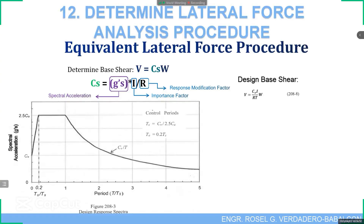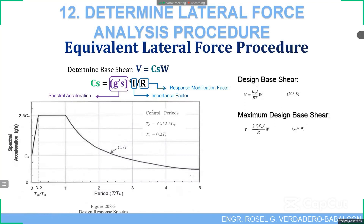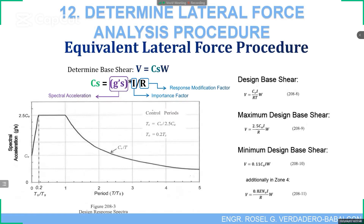The design base shear is V = CvI / (RT) times the seismic weight W, found in equation 208-8. The maximum design base shear is 2.5CAI / R times W, from equation 208-9. The minimum design base shear is 0.11CAI times W, from equation 208-10. Additionally, in zone 4, V = 0.8ZNVI / (RT) times W, from equation 208-11.